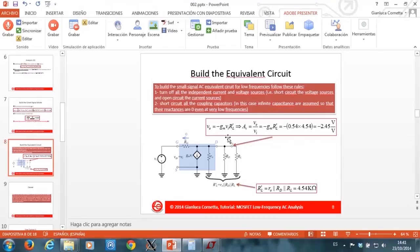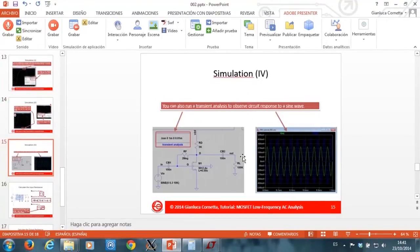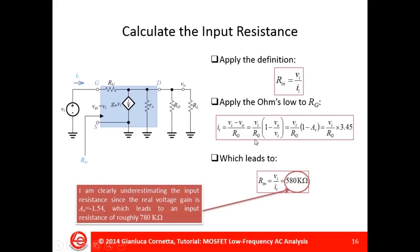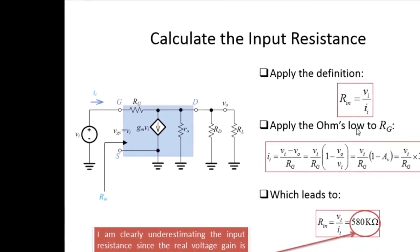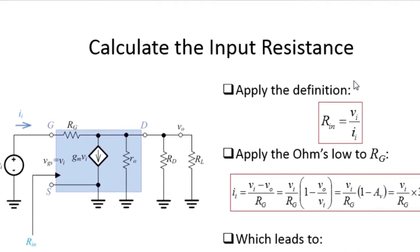Now, if I come back to my presentation, I want to compute the input and output resistances. I can compute the input resistance by simply applying the definition. By definition, the input resistance of the amplifier is the relation between the input voltage VI and input current II.